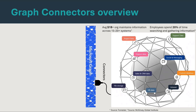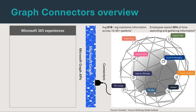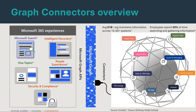Using Graph Connectors, you can actually bring in the content of all these data sources spread across your organization into Microsoft Graph, where your first-party Microsoft content is already residing. On top of this, you can build or leverage different experiences. The primary one we are talking about today is Microsoft Search. But apart from that, other experiences like Viva Topics, Security and Compliance, people experiences, recommendations, and feeds are also going to come in the future — and some are already in preview. Feel free to reach out and we can see how we can help.